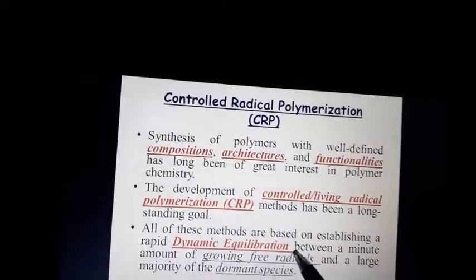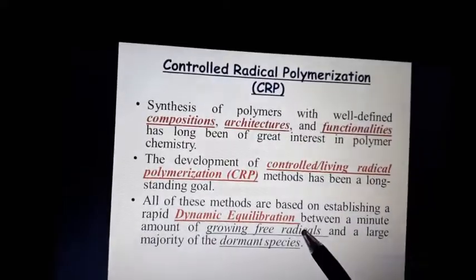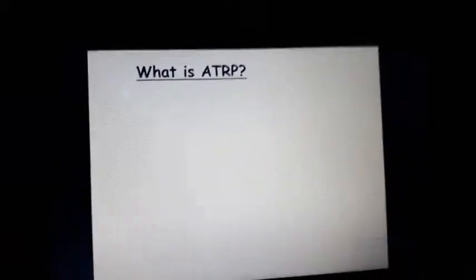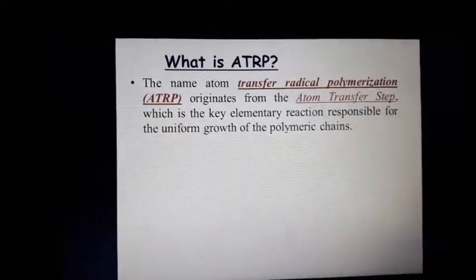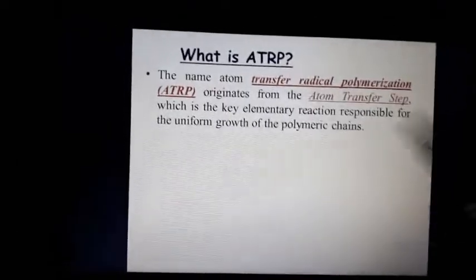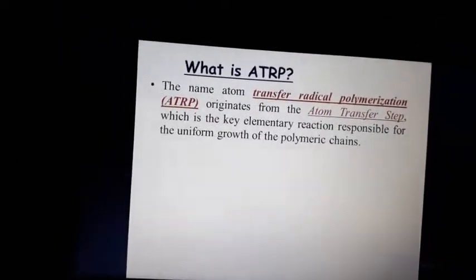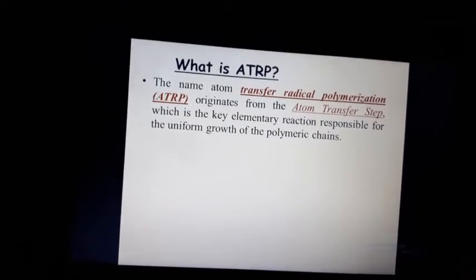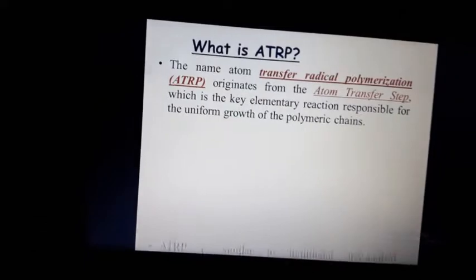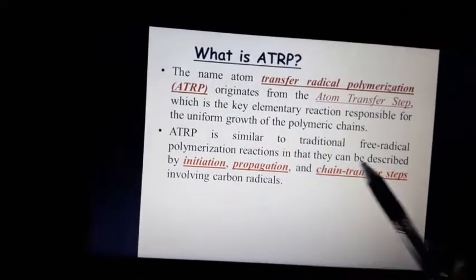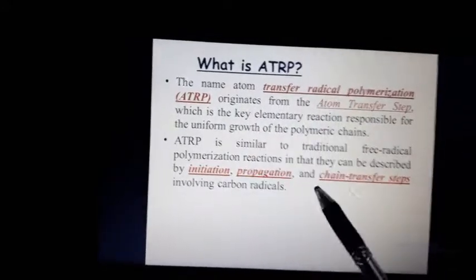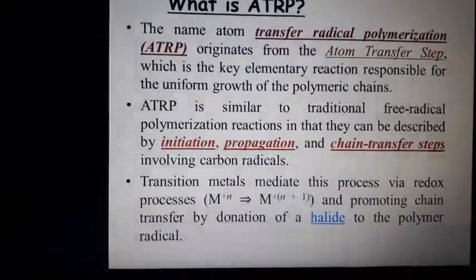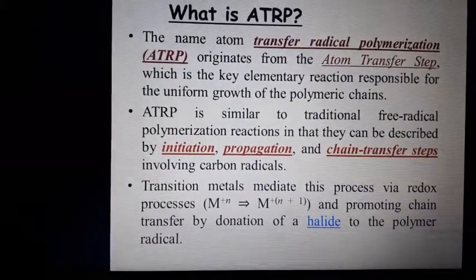All of these methods are based on establishing a dynamic equilibrium between a small amount of growing free radicals and a large majority of dormant species. ATRP stands for atom transfer radical polymerization, which originates from the atom transfer step — the key elementary reaction responsible for the uniform growth of polymer chains. ATRP is similar to traditional free radical polymerization, consisting of initiation, propagation, chain transfer, and termination.